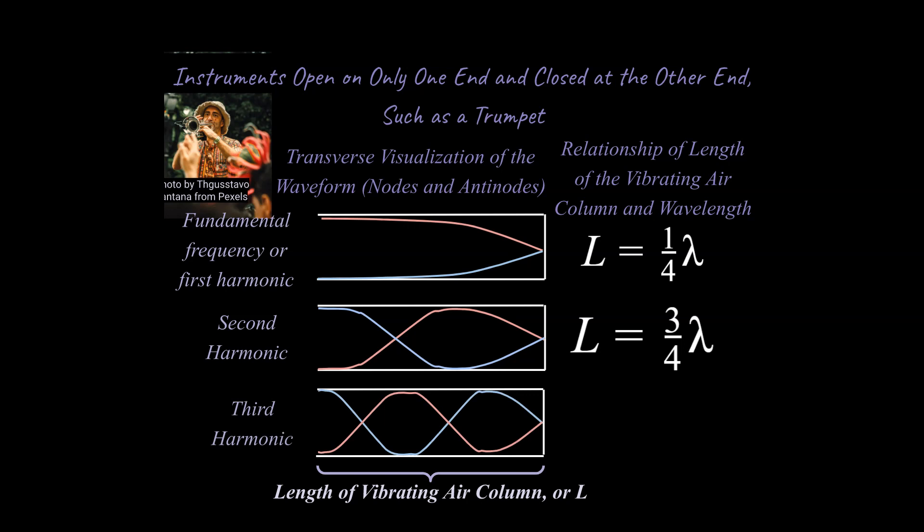Alright, and our third harmonic that we're going to take a look at is going to look like this. Again, following the same principle of starting with the node on the closed end and an antinode on the open end. What is our L value going to be here equal to in terms of wavelength? Okay, and so let's take a look at this. So this would be one complete cycle plus one more quarter of a cycle, right? And so we would call that five-fourths. So we would say this L value, this length, is equal to five-fourths wavelengths, and that's how you reason through it.